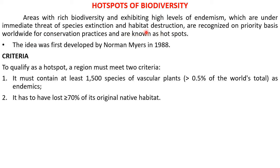A hotspot is basically a particular area or region. It has rich endemic species. What is an endemic species? That species is found only in that same region. In that region, the endemic species exists only there. So in the same region, you can protect the endemic species. By conserving that area or region, which is a hotspot, we can protect the endemic species.